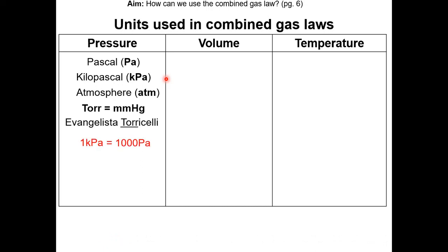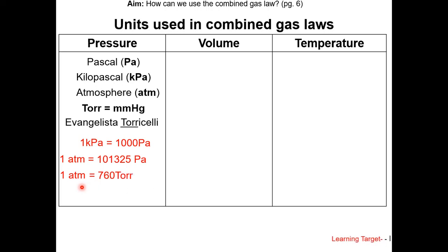1 kilopascal is equal to 1000 Pascal. 1 atmosphere is equal to 101,325 Pascal. 1 atmosphere is also equal to 760 torr.